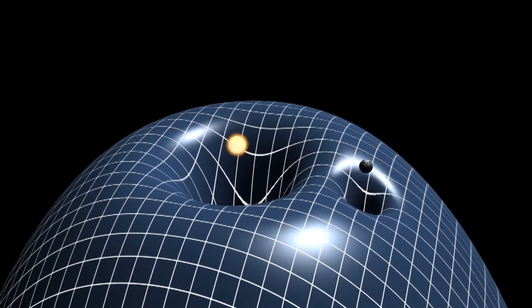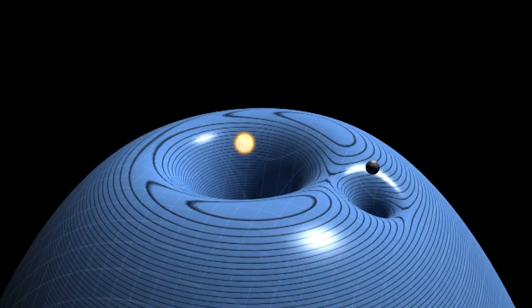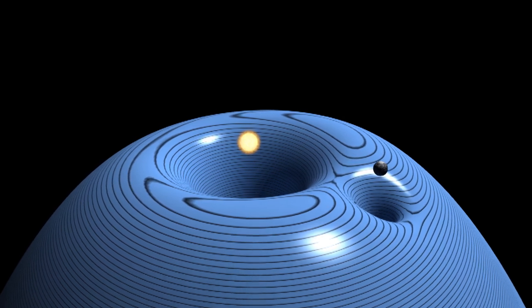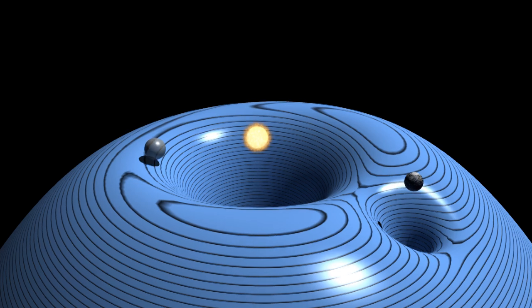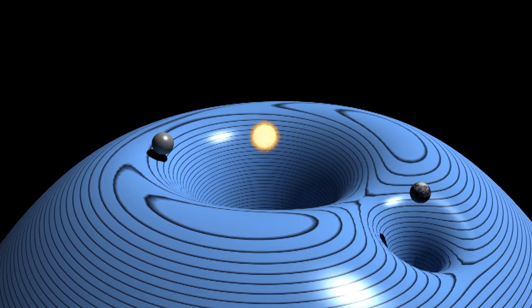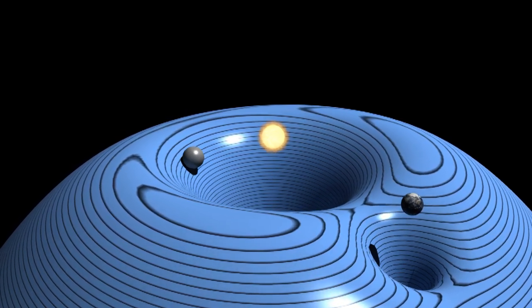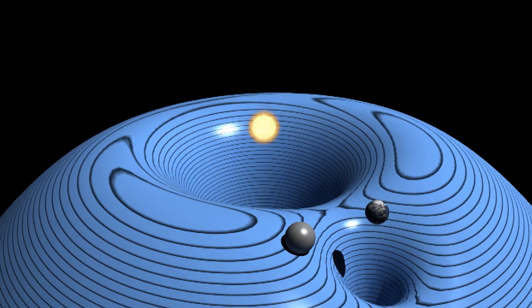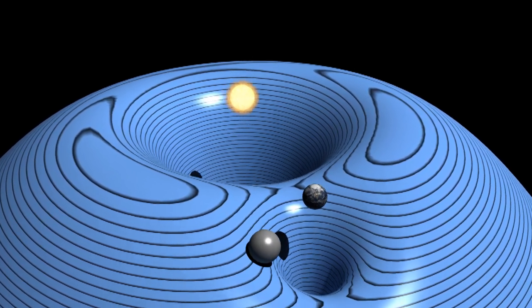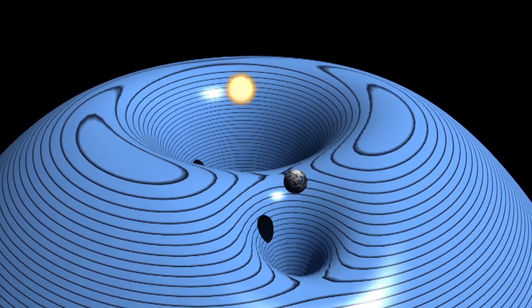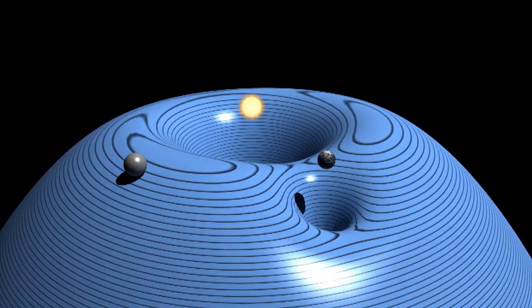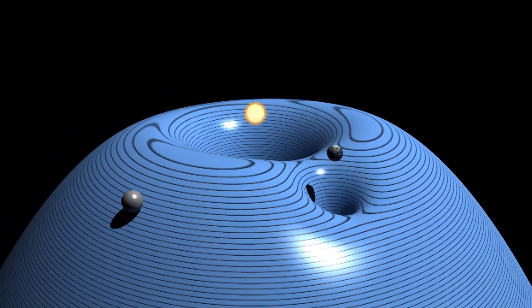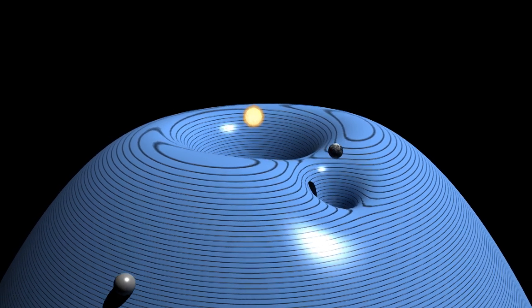This graph shows us the effective potential energy and it tells us how objects will move. An object whose orbit starts here will slowly drift towards the sun. An object starting here will slowly drift towards the earth. And an object starting here will slowly drift away into the outer solar system.